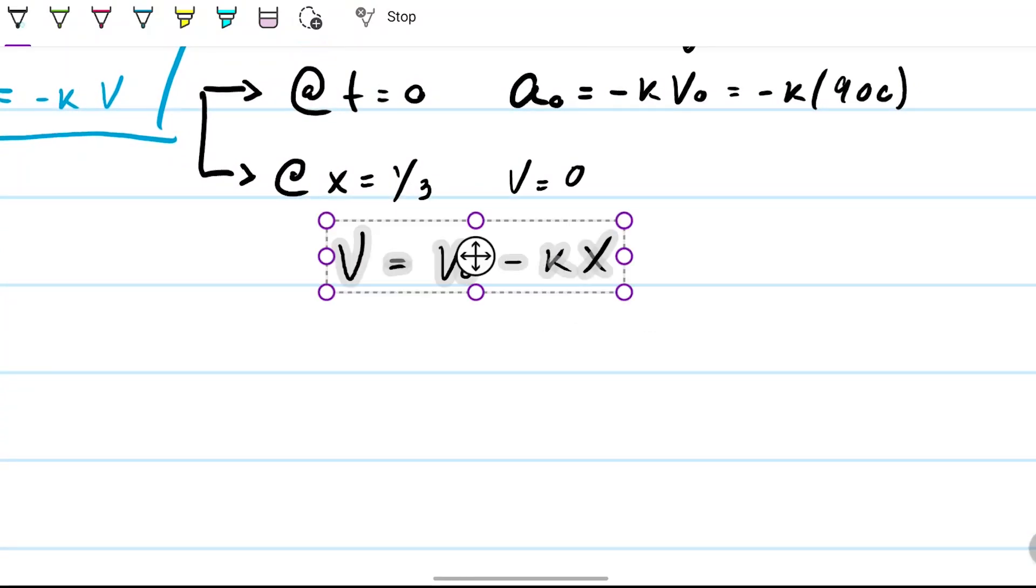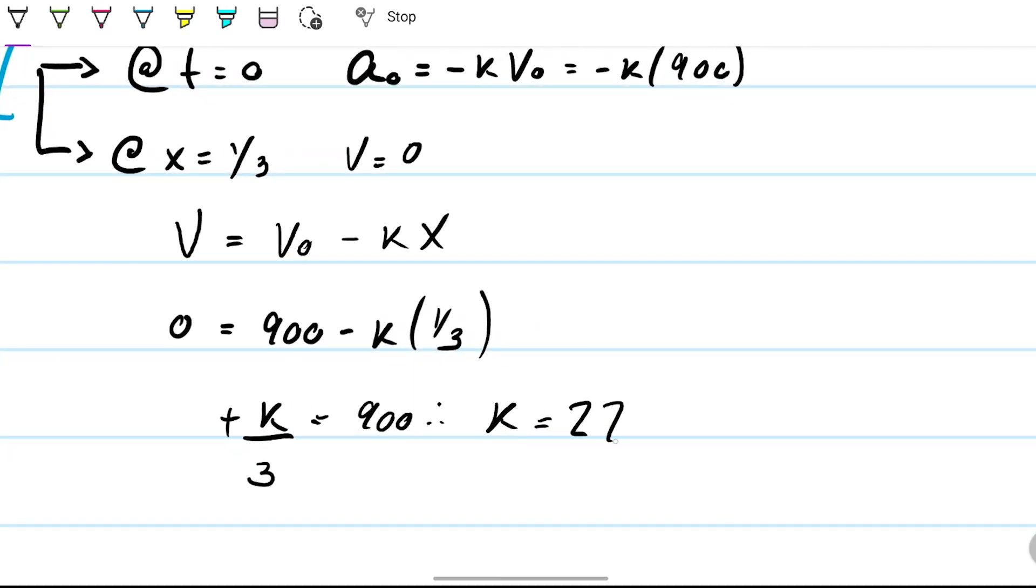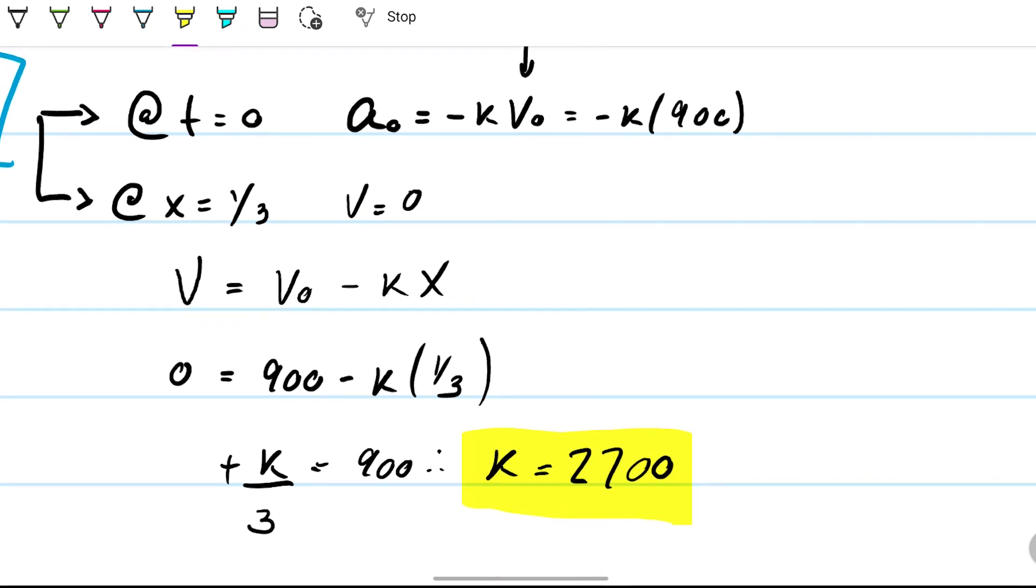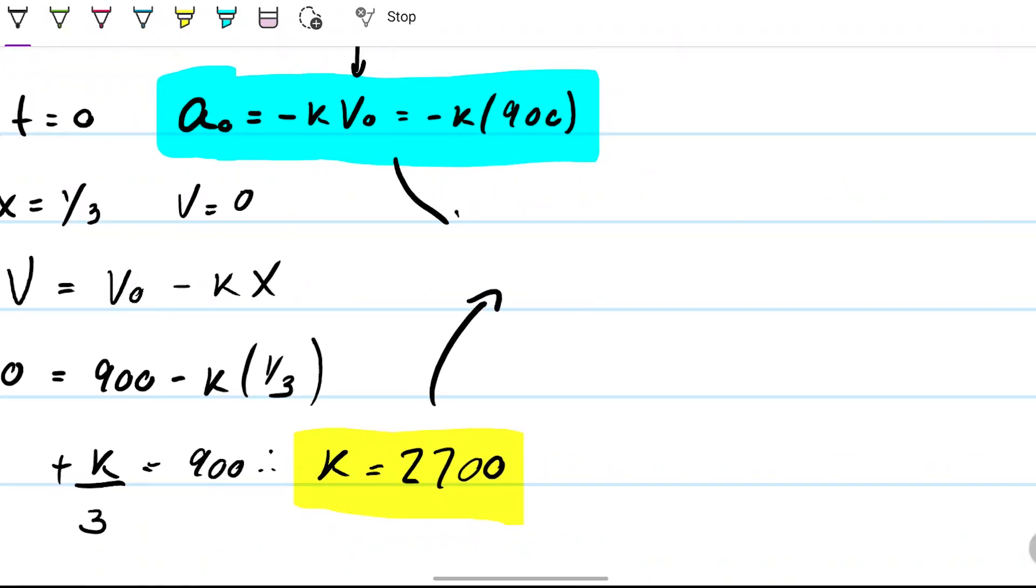Which means that minus k over 1/3 equals negative 900, which means that k equals 2700. So if k equals 2700 and a₀, which is what we're after, is just minus k times 900, then it follows that let's combine these pieces of information to figure out that a₀ is just minus 2700 times 900.